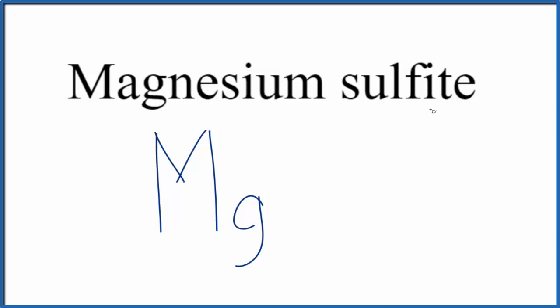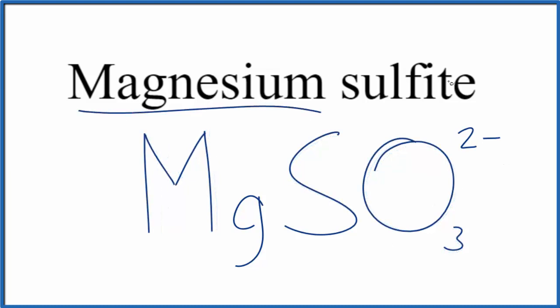So you either memorize that the sulfite ion is SO3 and the whole thing has a 2- ionic charge, or if you're allowed you look it up on a table of polyatomic ions. So since magnesium is a metal and the sulfite ion is a group of nonmetals,